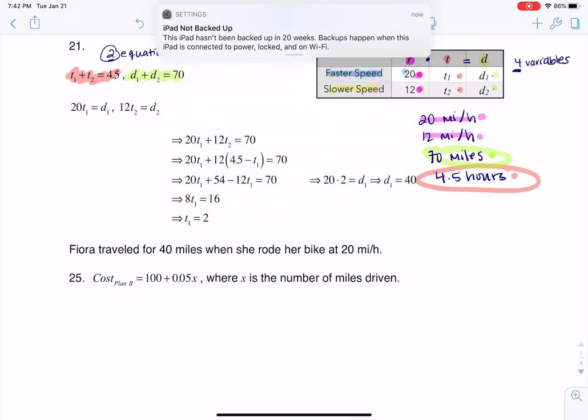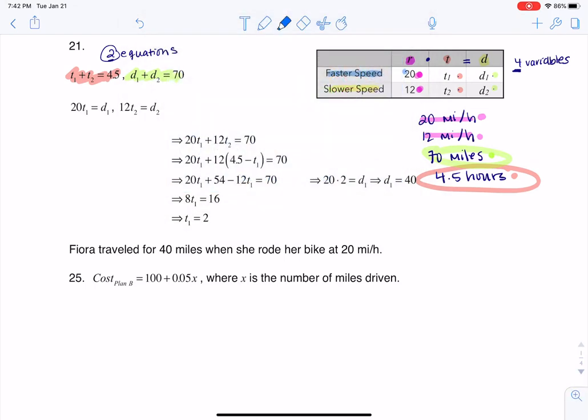Rate times time equals distance, so what I'm going to do now is make this equation that 20 times t1 is equal to d1. And then I'm going to make this equation that 12 times t2 is equal to d2. Now if we go through this, I don't have two equations, I have four equations, and that's a good thing. That means this is solvable.